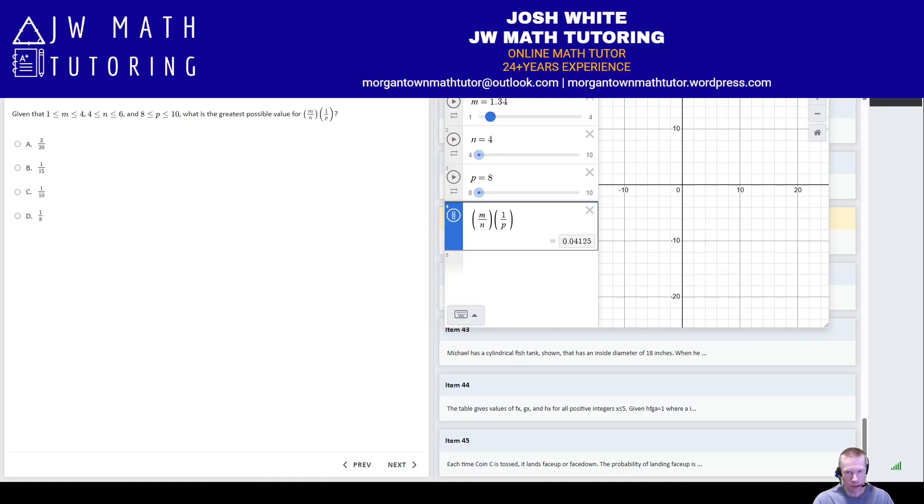So for example, I want the largest possible value. When I make M larger, does the value of the number increase? Yes. I mean, it's still a decimal, so it might be difficult to see, but notice it goes from .03 all the way up to .12 or .125. So I want M as large as possible. What about N?